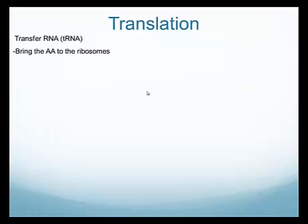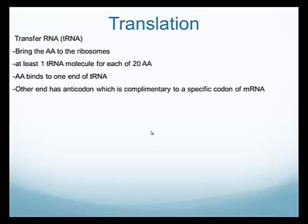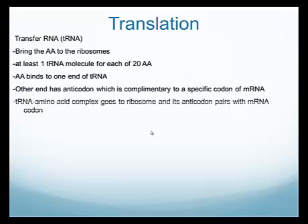Now let's look at the tRNA molecule. As mentioned, it's transfer RNA — it brings amino acids to the ribosome to place them in the right spot. There is one tRNA for each of the 20 different amino acids, so that makes 20 different tRNA molecules. One end of the tRNA holds the amino acid, and the other end has a specific triplet called the anti-codon, which is complementary to the mRNA strand. The tRNA-amino acid complex goes to the ribosome and its anti-codon pairs with the mRNA.